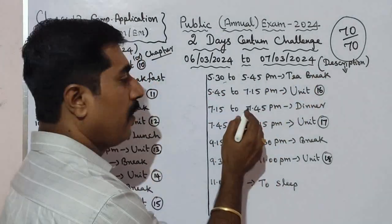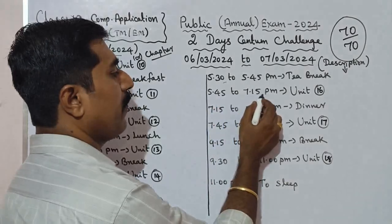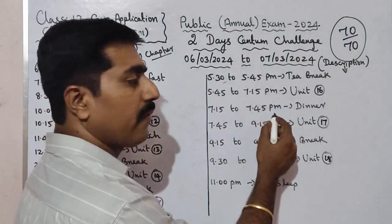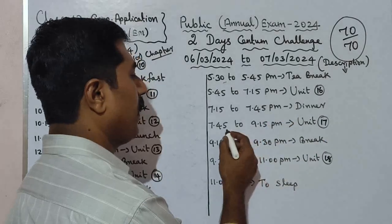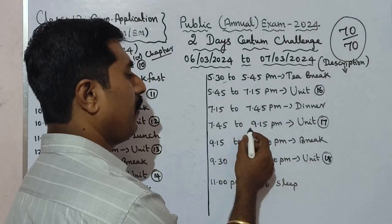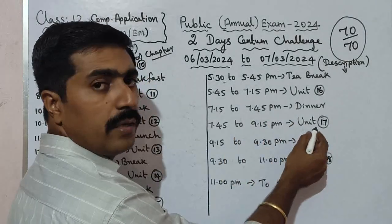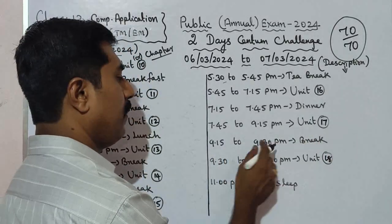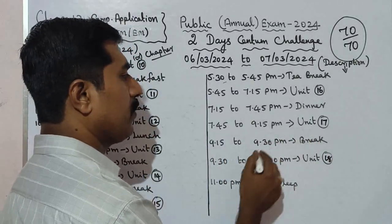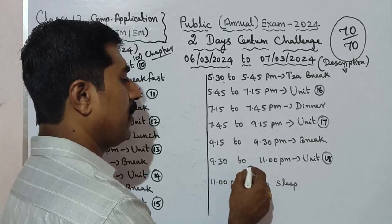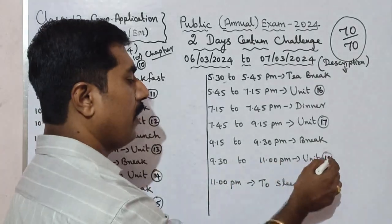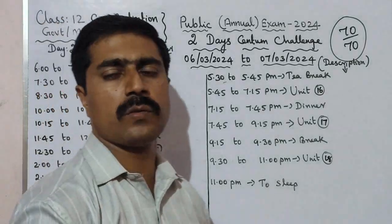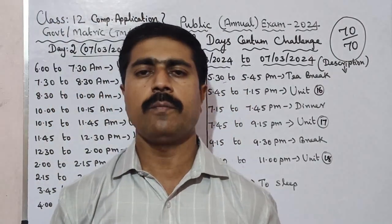From 5:45 to 7:15 PM is Unit 16. Then 7:15 to 7:45 PM is dinner. From 7:45 to 9:15 PM is Unit 17. From 9:15 to 9:30 PM is a 15-minute break. Then 9:30 to 11:00 PM is Unit 18. By 11 o'clock the full portion is covered.